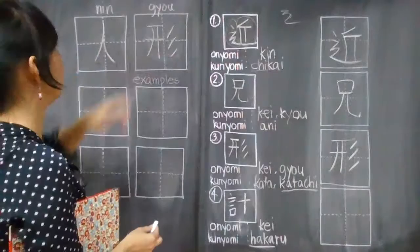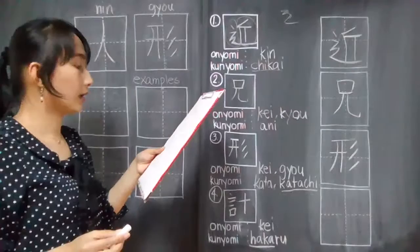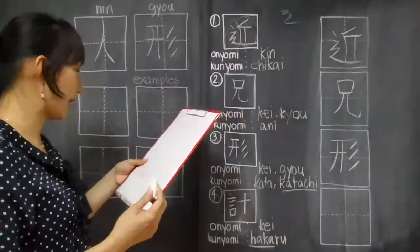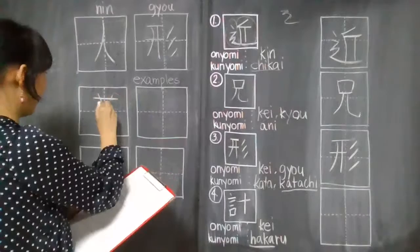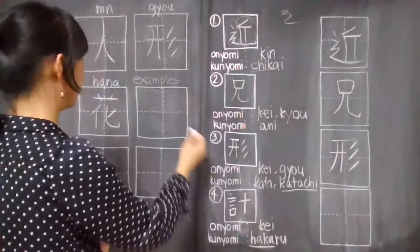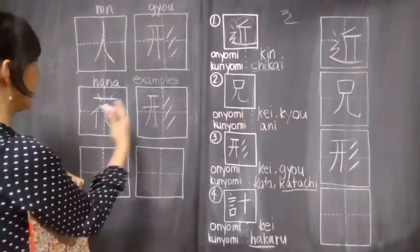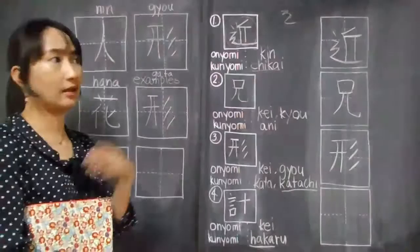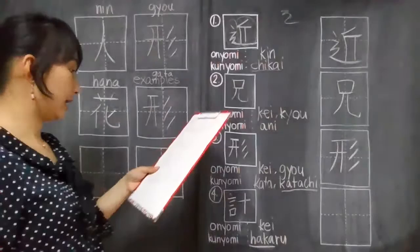Next is hanagata. Hanagata means floral pattern. All we have to do is write the kanji for hana, hana no kanji. This is hana. Then this one, you can also read this as kata or gata. Hanagata. Hanagata ga sukina. I like floral patterns.